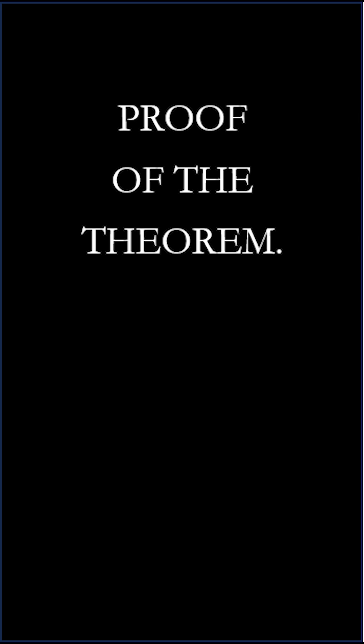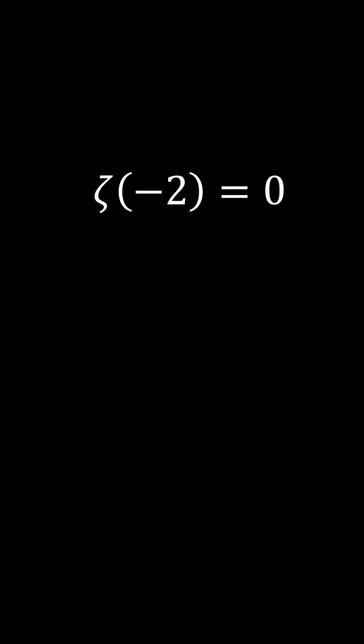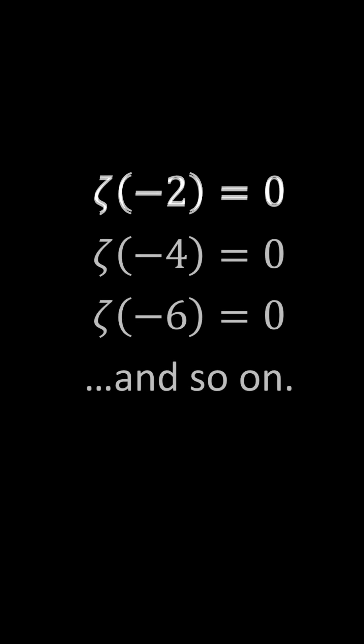The zero of a function is any argument that outputs zero value. For example, this is a zero of the Riemann zeta function, but it's trivial, as all the minus even integers are non-mysteriously also zeros.